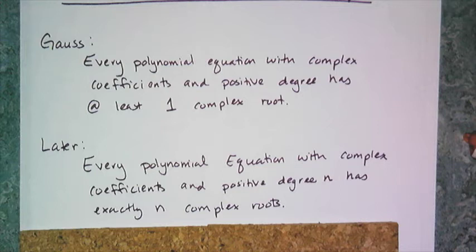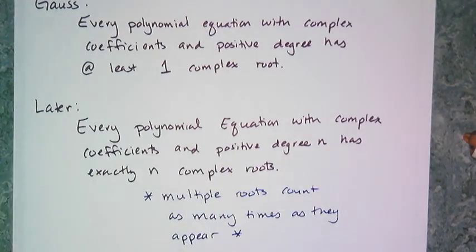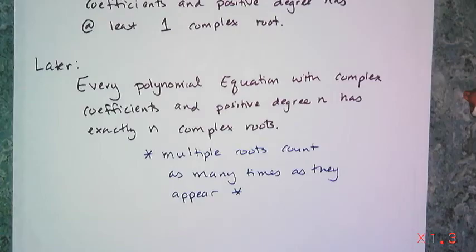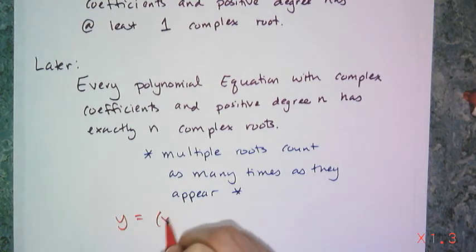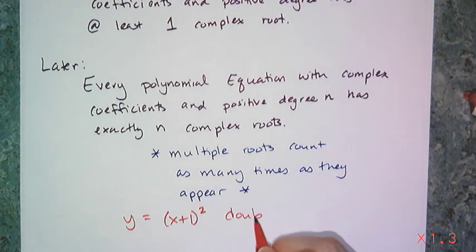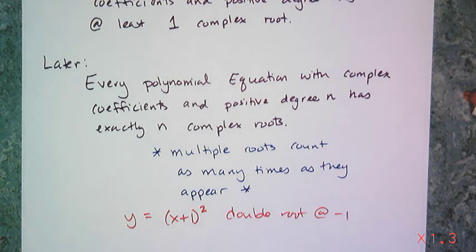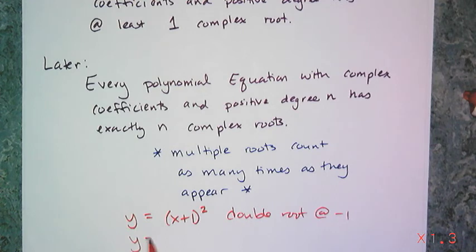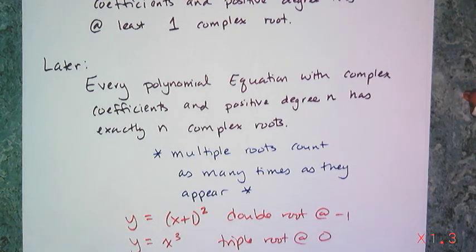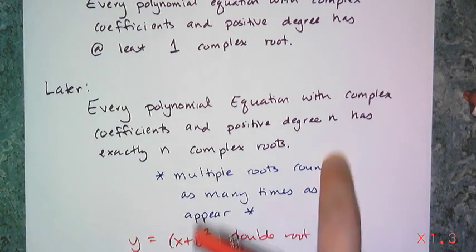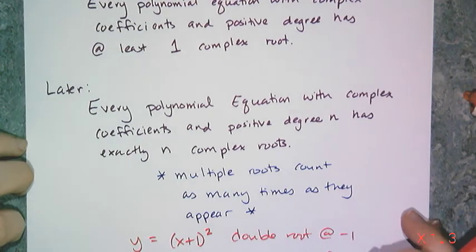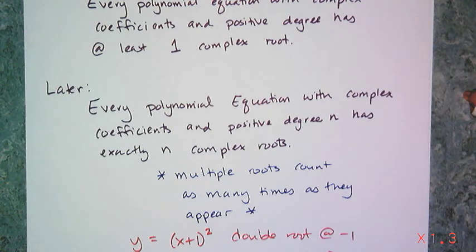Quadratics of degree 2 have 2 roots; cubics of degree 3 have 3 roots; quintics, meaning 5th-degree polynomials, have 5 roots. What makes this work is that any multiple root counts as many times as it appears. So y equals x plus 1 quantity squared has a double root at negative 1, counting twice. And y equals x cubed has a triple root at 0, so 0 counts 3 times. This is really what makes algebra work — without it, we'd have no idea how many roots to expect.